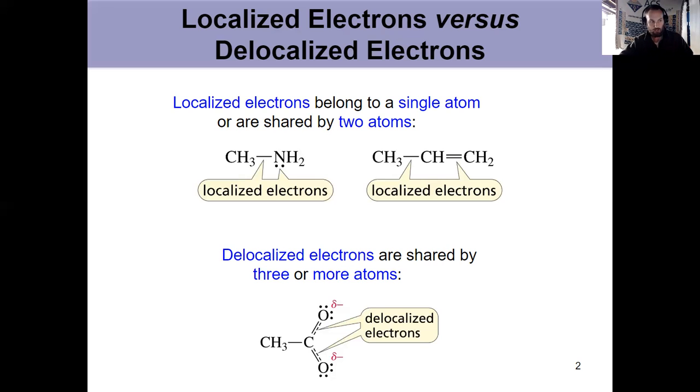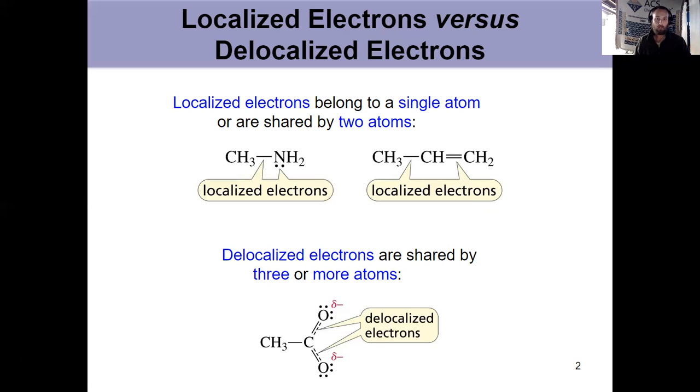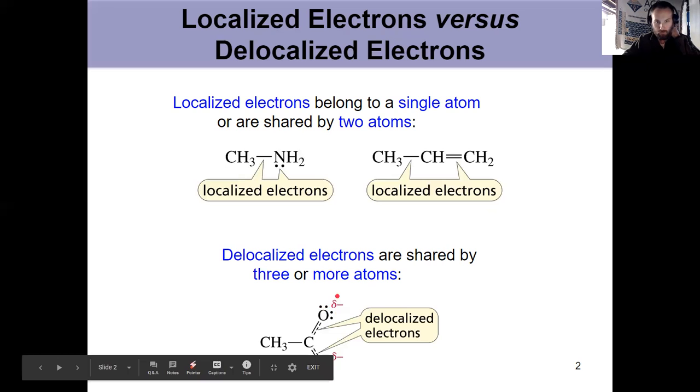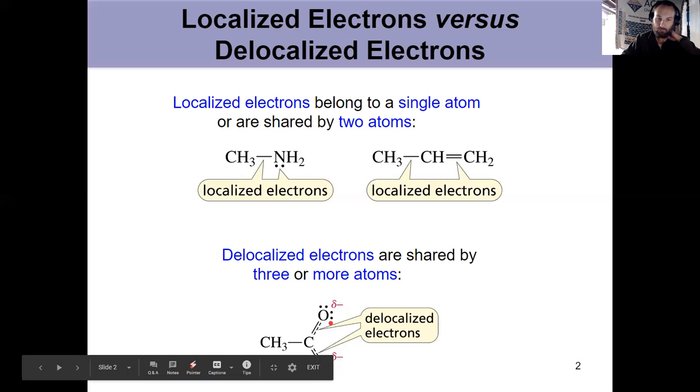Delocalized electrons are shared by three or more atoms, and so they're often represented by dashed lines, like we see down here, or multiple resonance structures, which we could show in this situation as well. And you need to be able to identify what electrons are delocalized, even if it's not explicitly shown. So a situation like here, even if I just showed one of the resonance contributors with the pi bond in one location, you should realize that pi bond could be delocalized in either place.